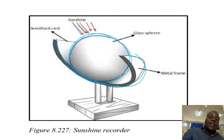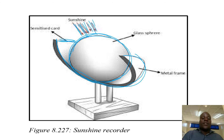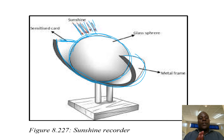The Sun's heat comes under a process of radiation and heats the glass sphere. Remember there is a sensitized card with some lines — a trace. When there is too much sunshine, the trace will get burned. The amount will be recorded on the card, and you can read the card to know the amount of sunshine received in terms of hours and minutes.